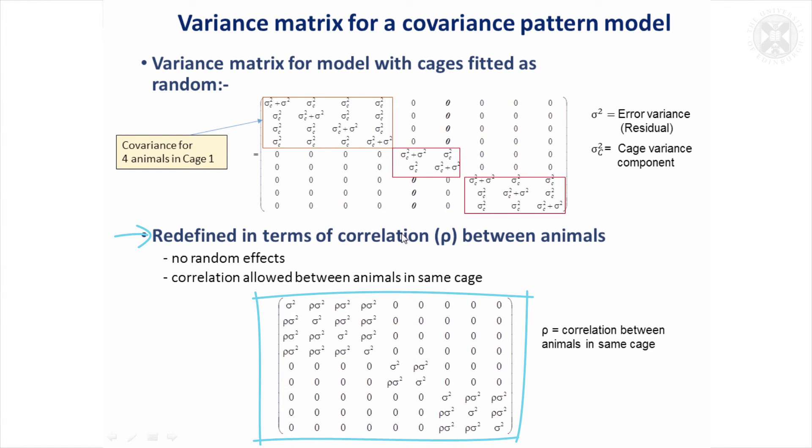So instead of variance components from a random effect, we've just got one residual variance, and we've got a correlation parameter for the correlation between animals in the same cage. And of course correlations are allowed to be negative as well as positive, so we've now got a model that is effectively allowing for a negative variance component for cages, but we've defined it in terms of correlations between animals in the same cage.